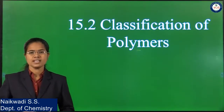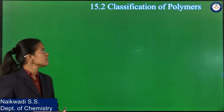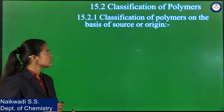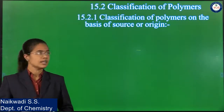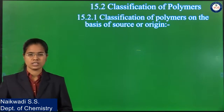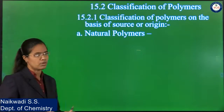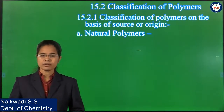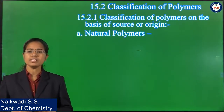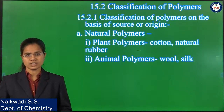The next point is the classification of polymers. The first way to classify polymers is on the basis of their source or origin. The first type is natural polymers — polymers which are obtained from nature, whose sources are from nature.